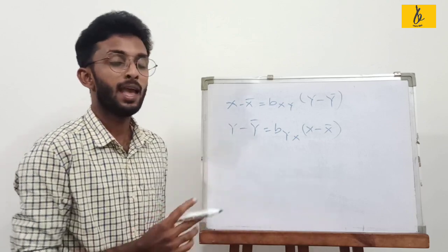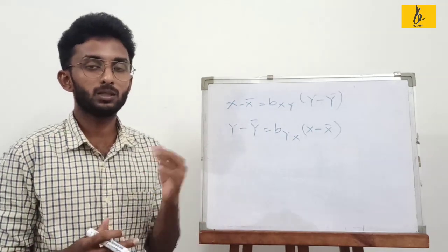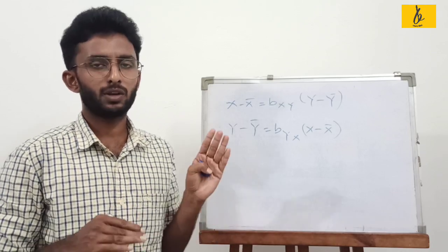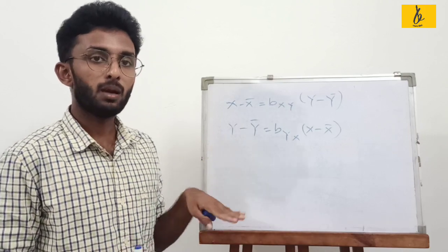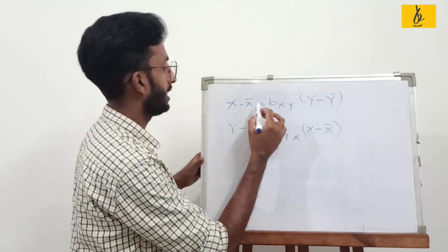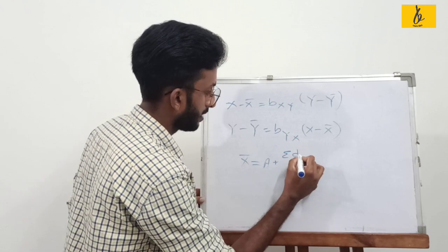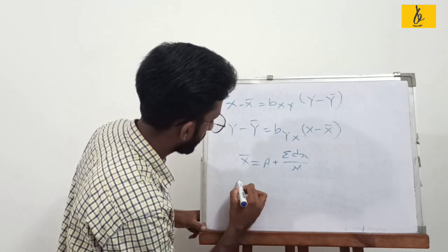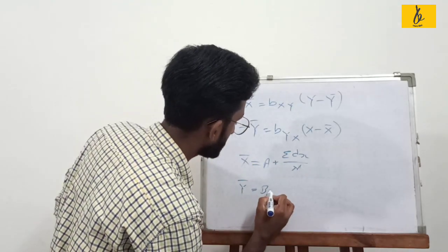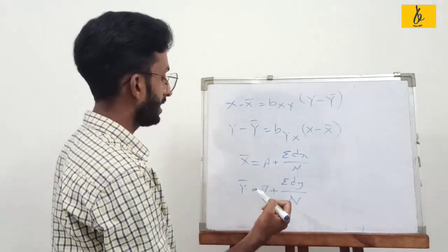This is the actual mean case. But in this case, we are using the assumed mean method. x-bar is equal to a plus sigma dx divided by n. And y-bar is equal to b plus sigma dy divided by n, where a and b are the assumed means of x and y respectively.